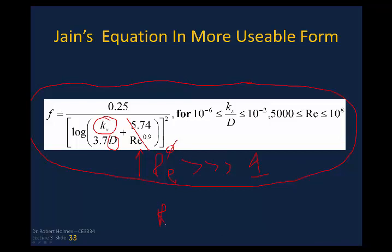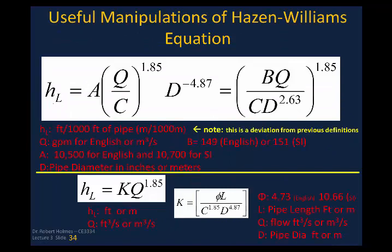Now you're ready to calculate the Reynolds number — density times mean velocity times pipe diameter divided by dynamic viscosity. Fluid properties like density and dynamic viscosity come from your fluid mechanics tables, found in Chapter 1 or 2 of the textbook. Plug in the velocity, get a Reynolds number, plug that into the Jain equation, and recompute F. If it matches, you're done; if not, iterate again.